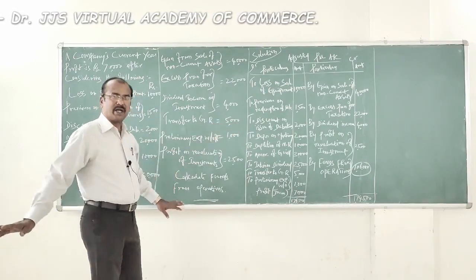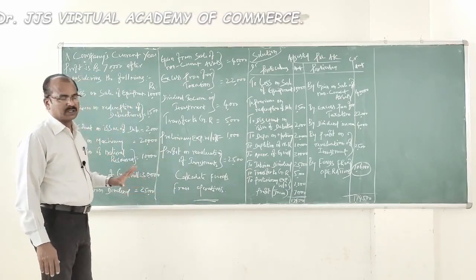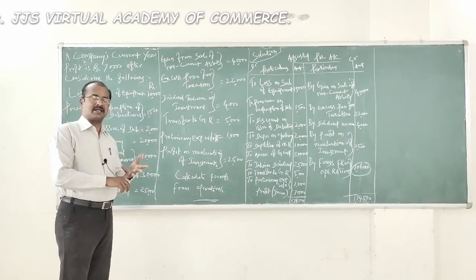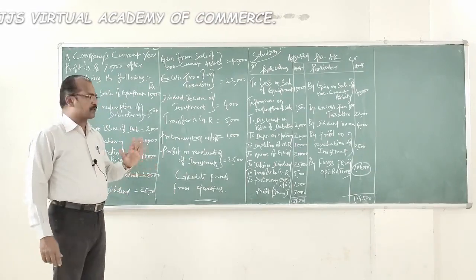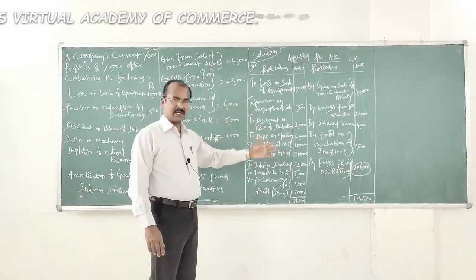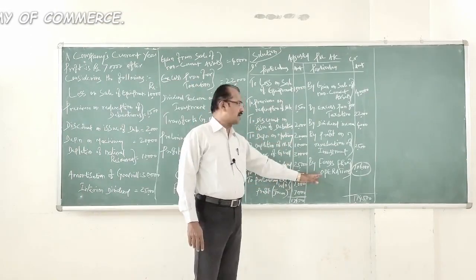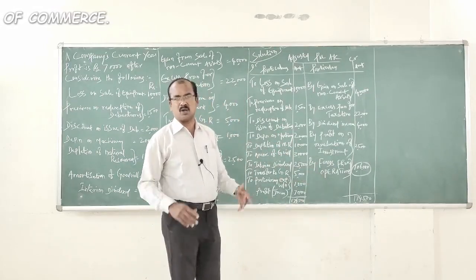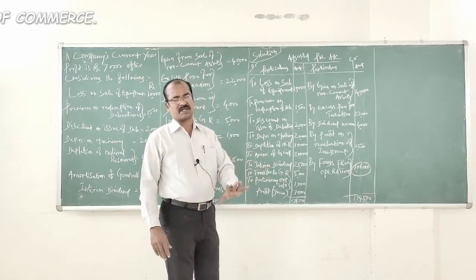So all these incomes and expenses fall within the category of either non-operating, non-fund, non-cash, or both non-operating and non-cash items — relating to both incomes and expenses. After recording all these items, we find a balancing figure of one lakh six thousand rupees on the credit side of the adjusted P&L account, which is nothing but the funds from the main operations of the business.